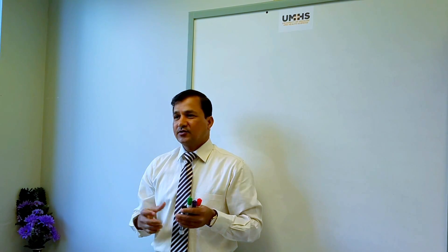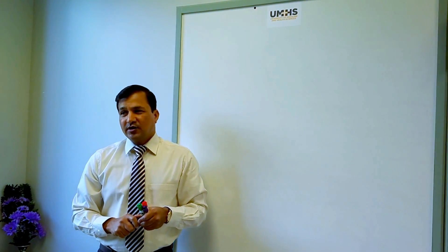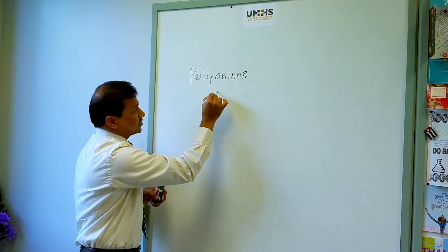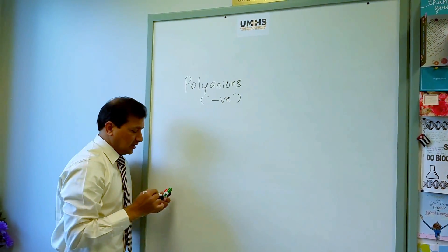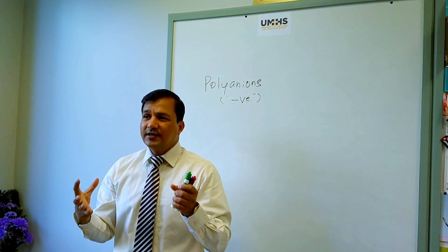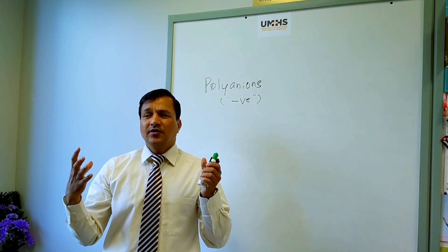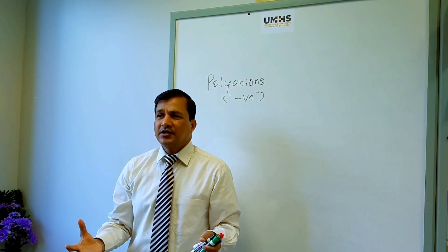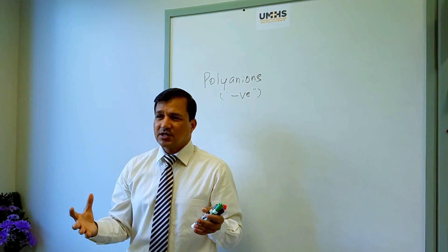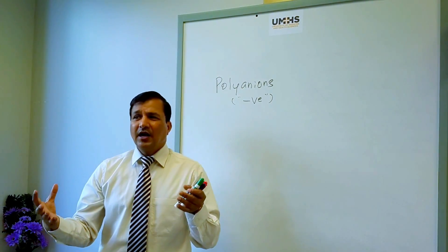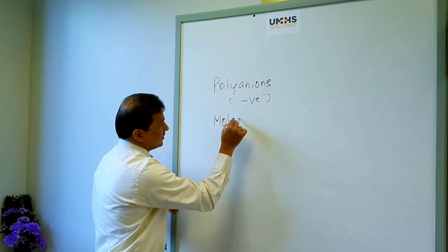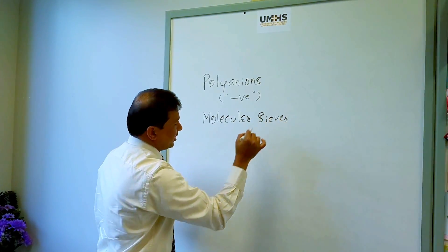Proteoglycans are basically polyanions — they have a lot of negative charges because of the huge number of carboxylic groups (COO⁻) and sulfate groups (SO4²⁻). These charges make them polyanions. Proteoglycans are extracellular matrix proteins that interact with polycations such as sodium and potassium present in the extracellular matrix, and that interaction traps water. This makes proteoglycans act as molecular sieves.